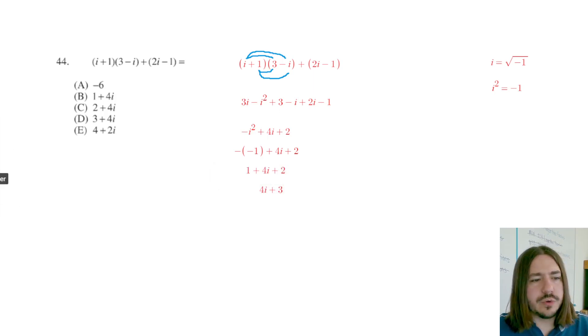And our answer choice we can find here is letter D. 3 plus 4i. They have it flipped. Addition is commutative. A lot of times you'll see that conventionally the imaginary part of this complex number is going to be written to the right. It doesn't really matter, to be quite honest with you. These two statements are equivalent. So our answer is going to be D.